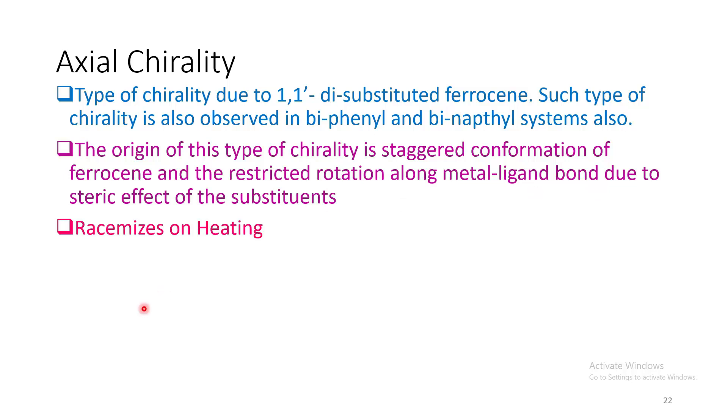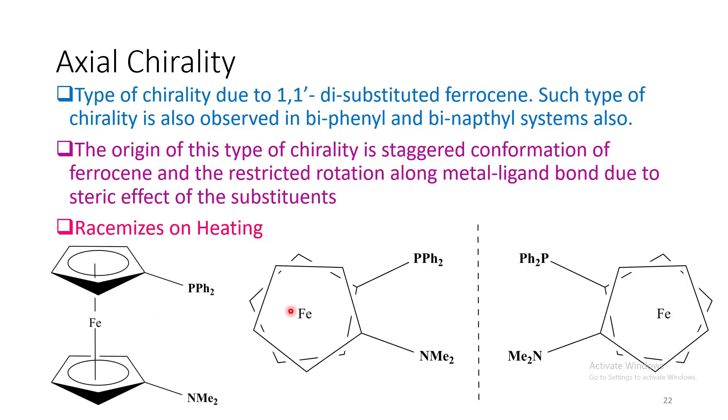Now upon heating, this metal-carbon bond becomes elongated and this substituent can move far apart. Then it can undergo free rotation and that causes racemization. So now if we visualize this complex in the perpendicular plane, we can easily see this complex and its mirror image is non-superimposable.